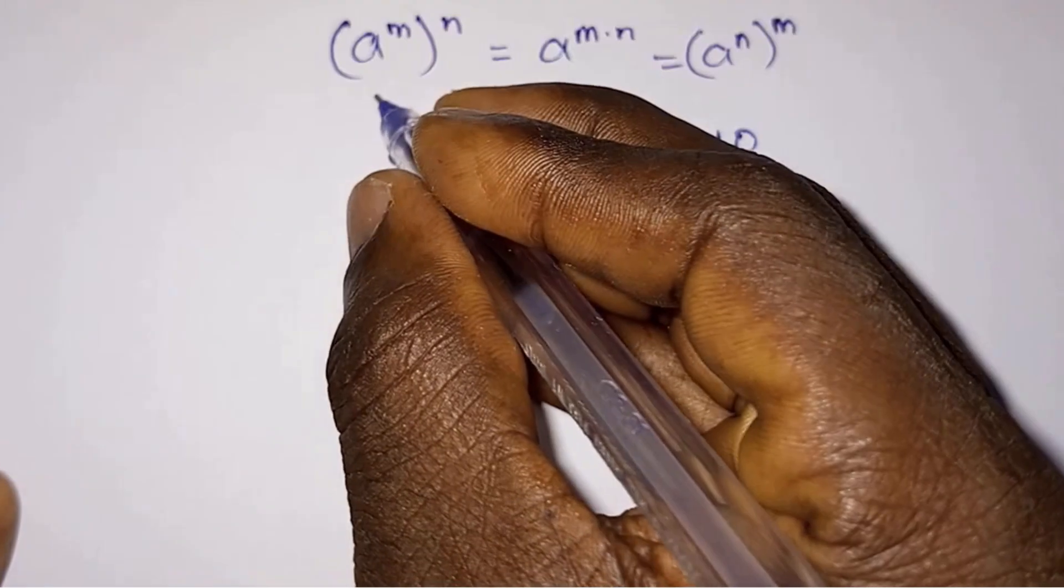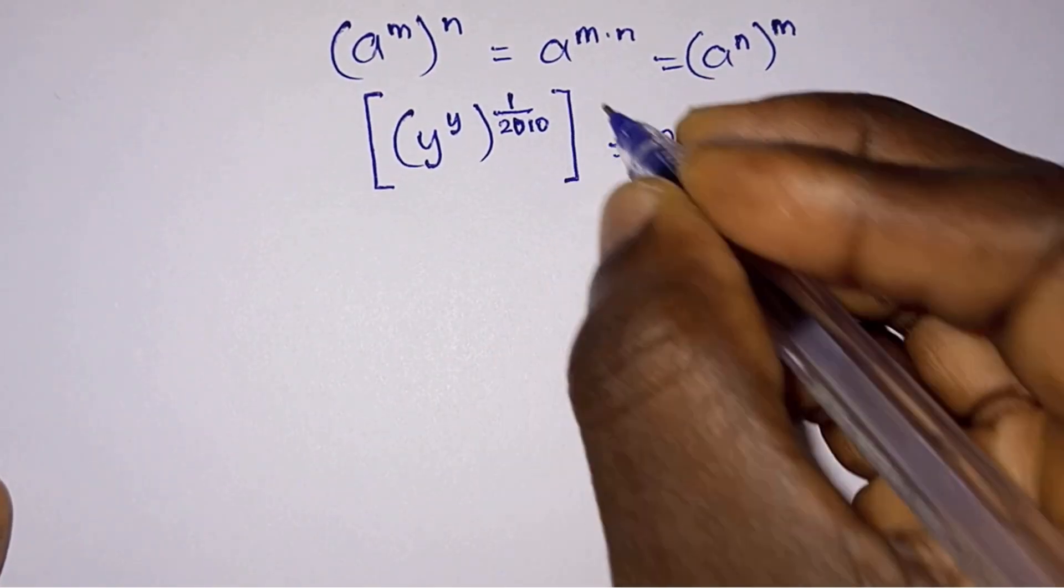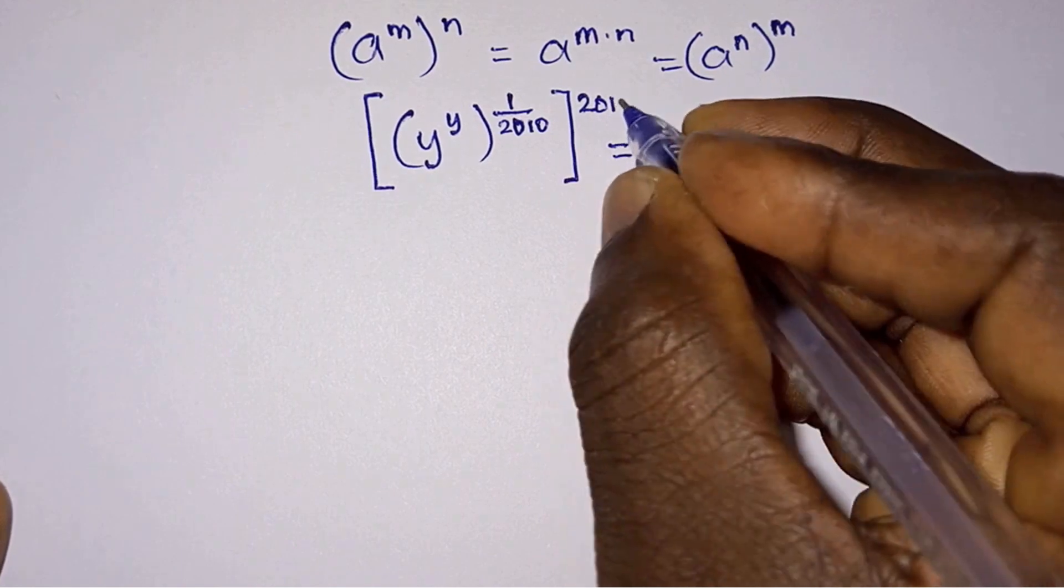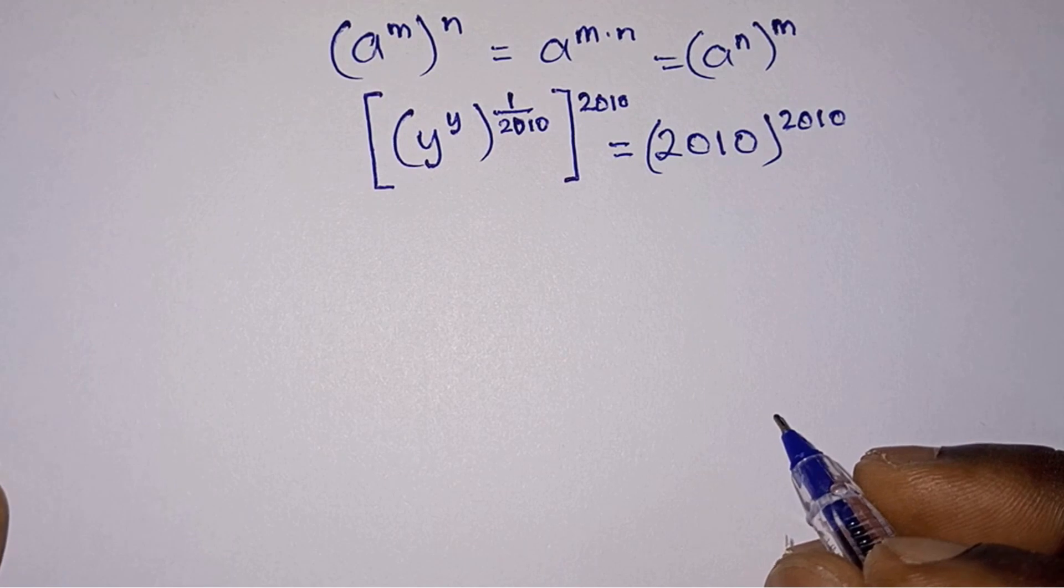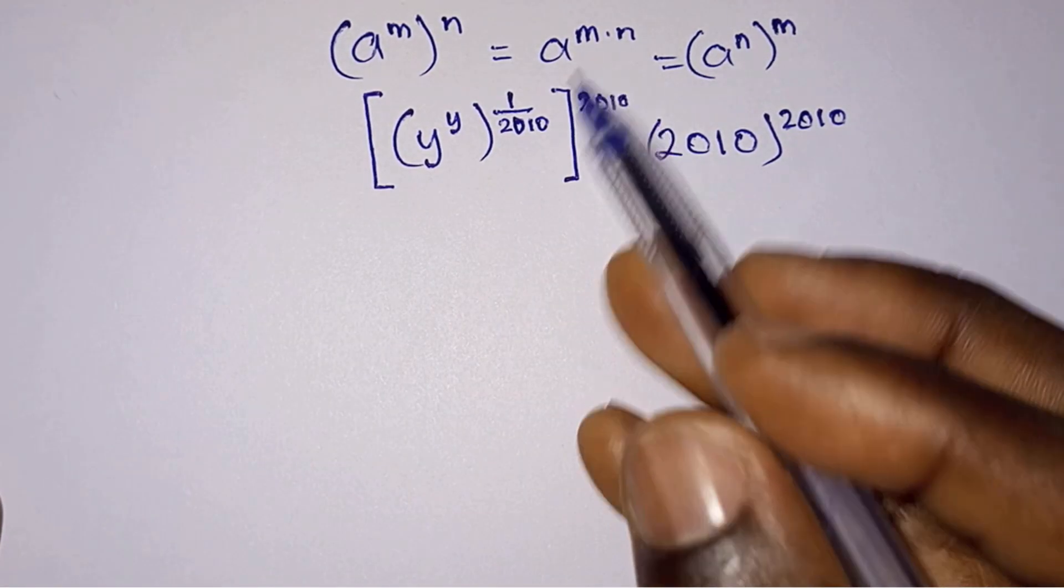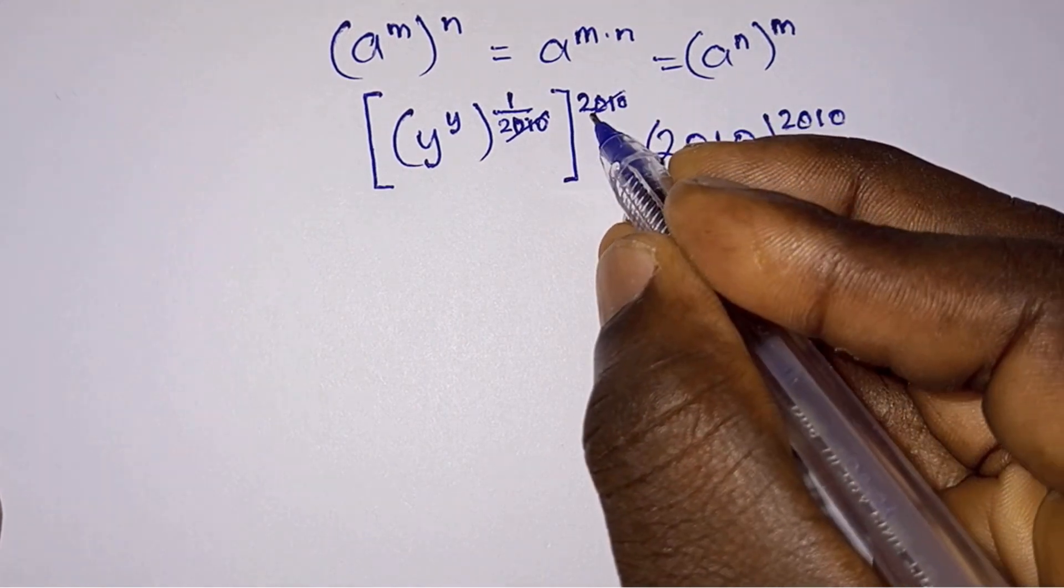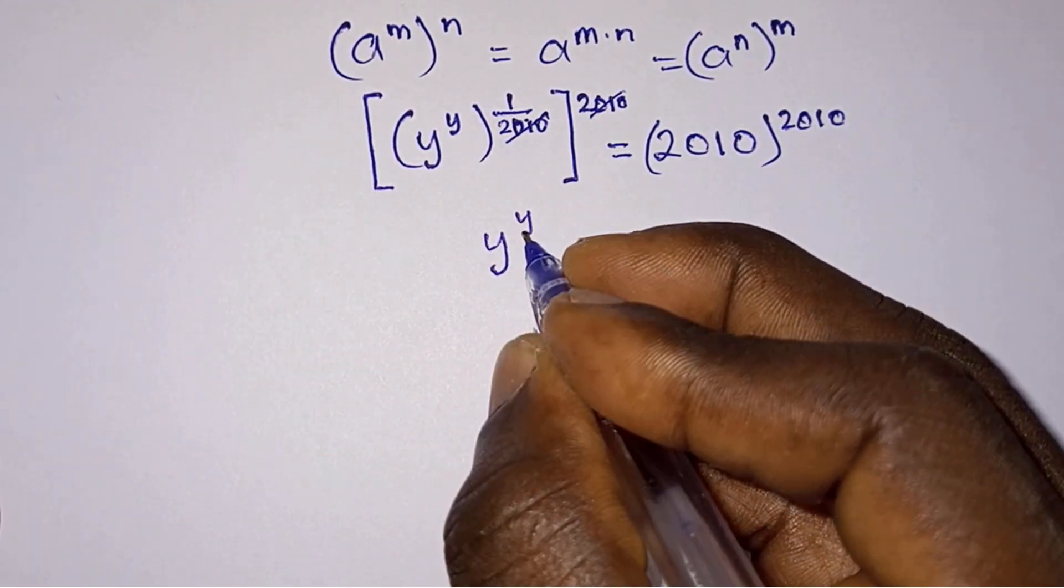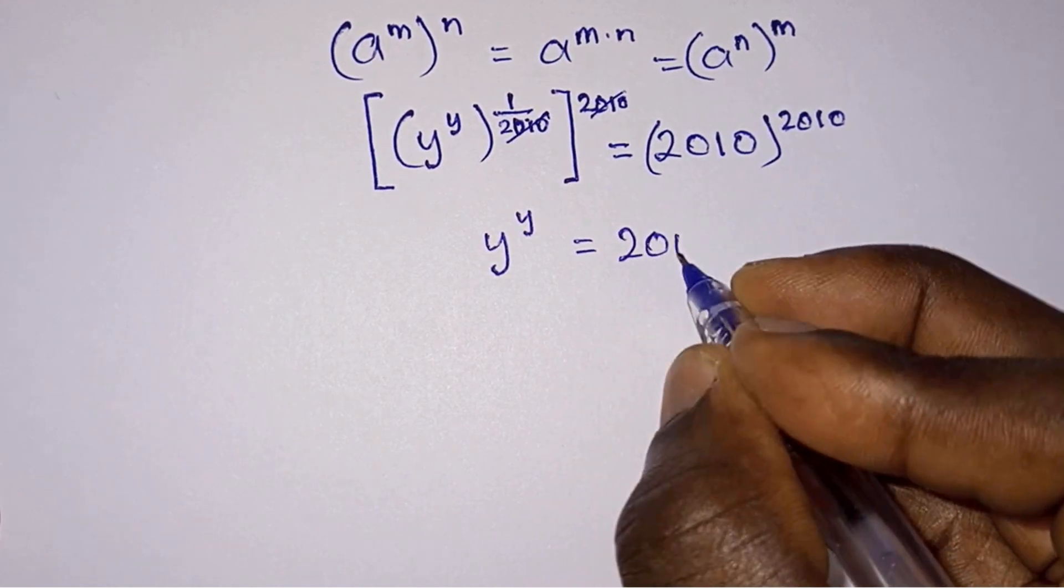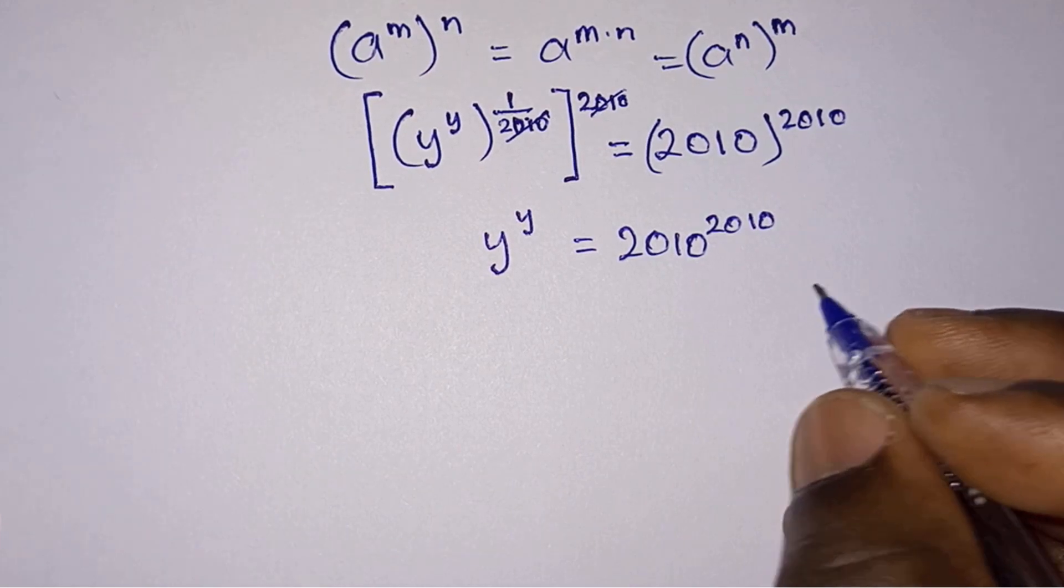Now let's raise each side of the equation to the power 2010 so that from this rule, if we multiply this by this, this 2010 will cancel this 2010, so we are left with y to the power y.